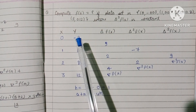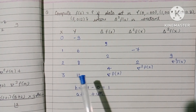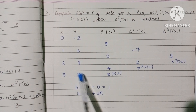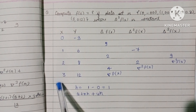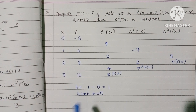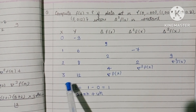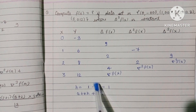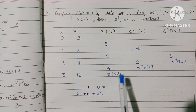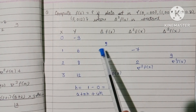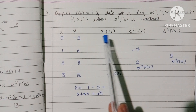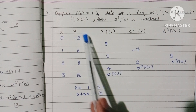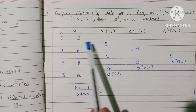For finding f of 6, which is beyond the given x values, we have to use Newton's backward interpolation formula. For that, firstly we have to find the forward differences.